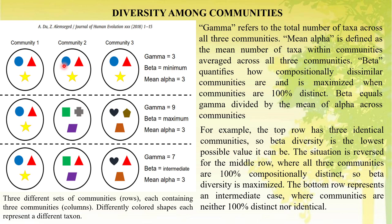The situation is reversed in the middle row, where the three communities each have different types of species. Gamma diversity is nine because all species are different. Mean alpha is still three because three plus three plus three equals nine, divided by three communities. But beta diversity is maximized here — all three communities are one hundred percent compositionally distinct, so beta diversity is maximized.